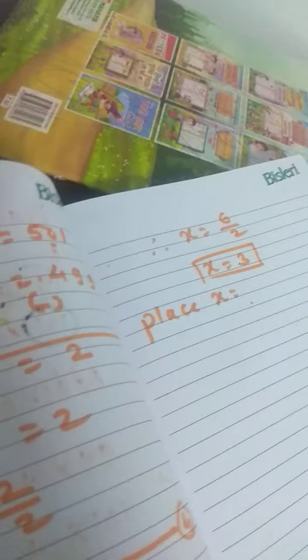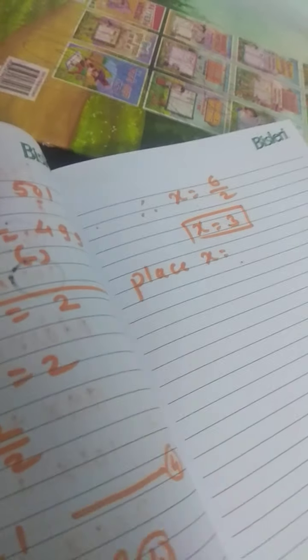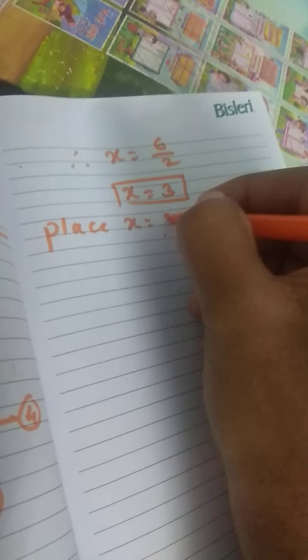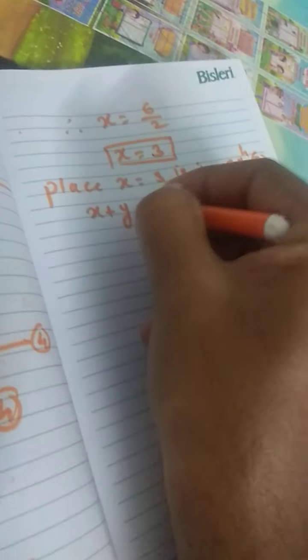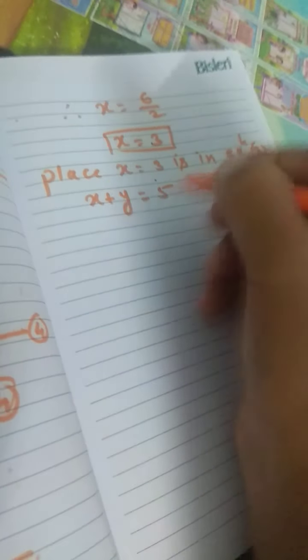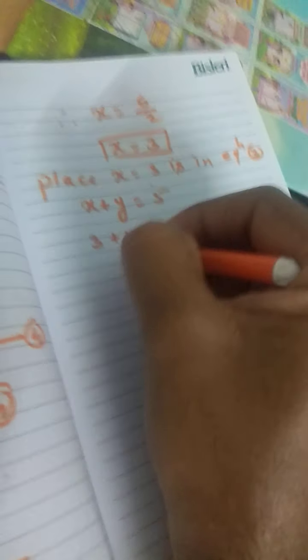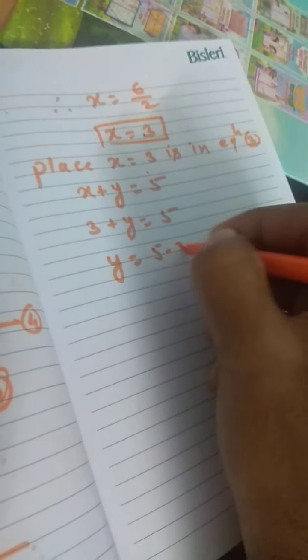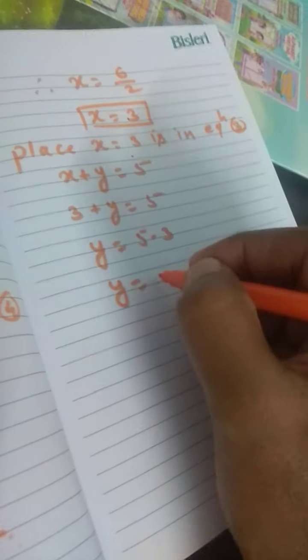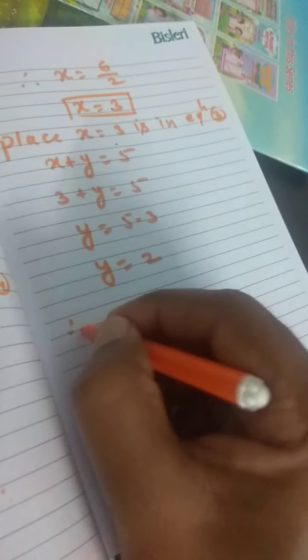Substituting x equals 3 in Equation 3: x plus y equals 5, so 3 plus y equals 5. Therefore, y equals 5 minus 3, and y equals 2.